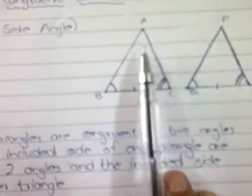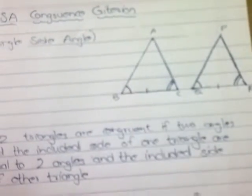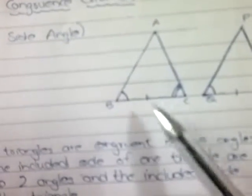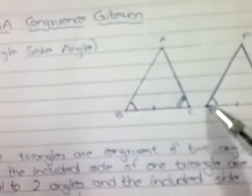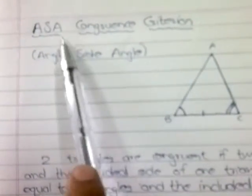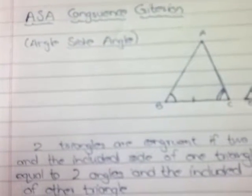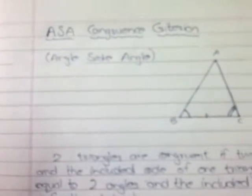For example, in this triangle we have angle B and angle C, and the side should necessarily be BC. It cannot be AB, because then you cannot apply the ASA congruence criterion. Even if AB is equal to PQ, you won't be able to apply the ASA rule, because the side has to be included between the two angles.